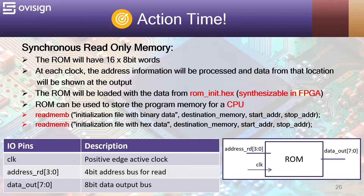In order to read data from a separate file, we can use the readmemb or the readmemh functions. The first argument is a string and is the name of the source file. Next, we have the destination memory, which is a reg variable from our file. Next, we have the start and the stop address.